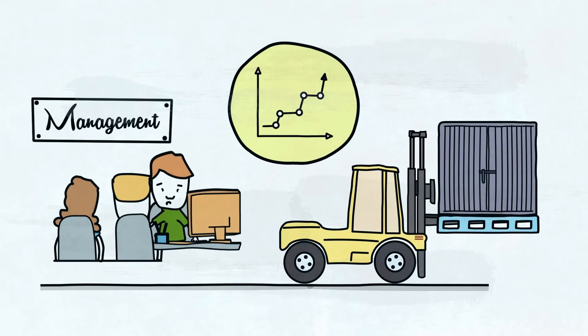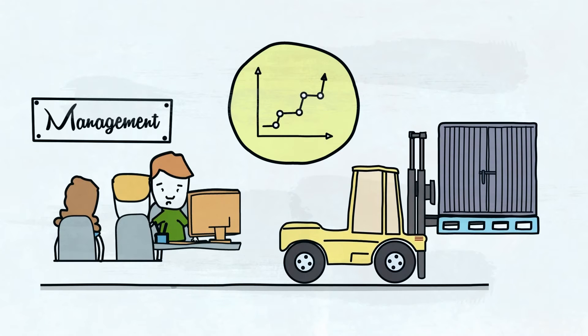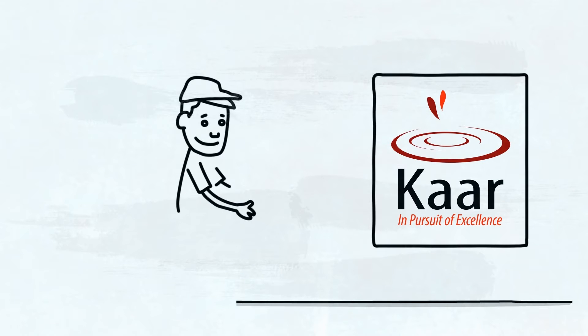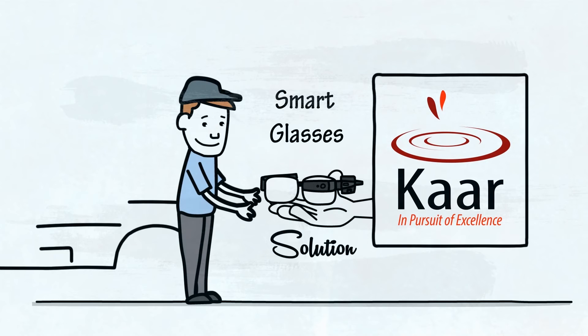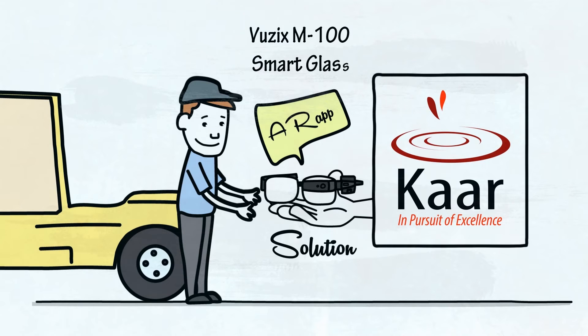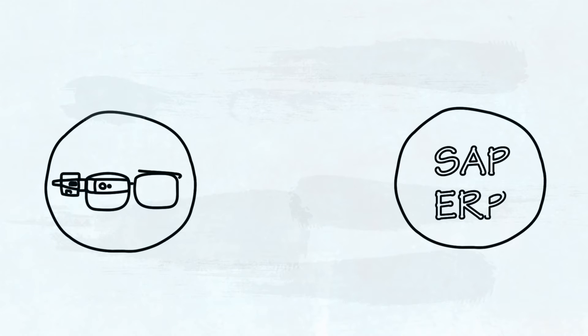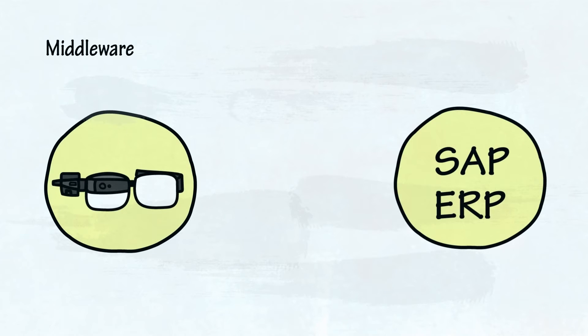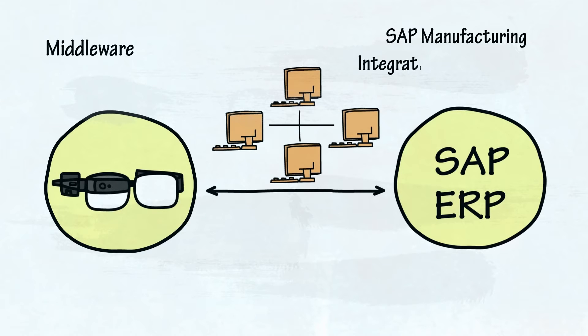This is where Kaar Technologies enter the picture. As a solution for the above business situation, Kaar recommended smart glasses for all material handlers and developed the Forklift AR app for the client. The app was hosted on the Vuzix M100 smart glass. Kaar integrated the smart glass application with the SAP ERP system using a middleware known as SAP Manufacturing Integration and Intelligence or MII.